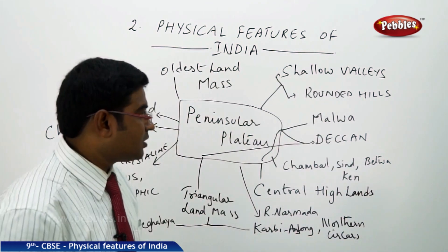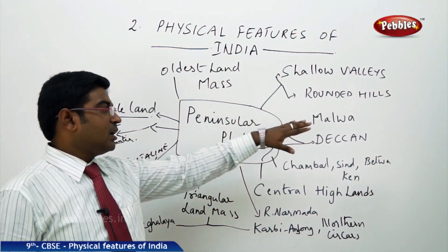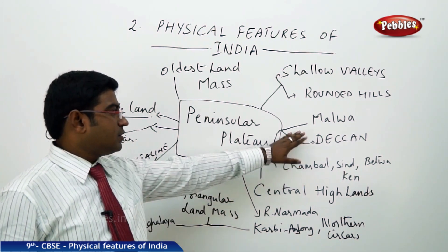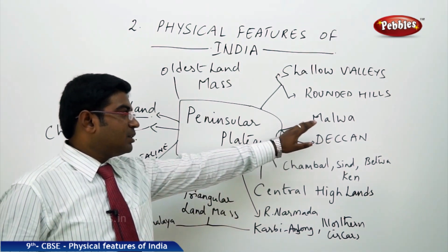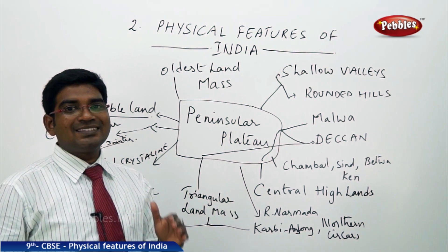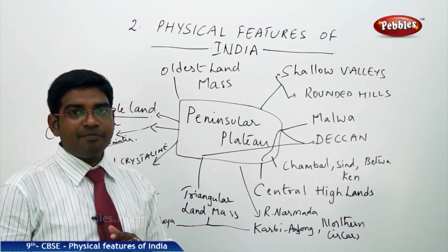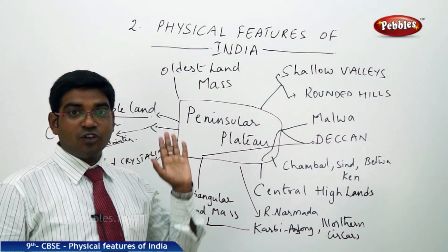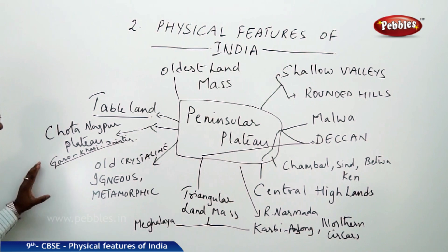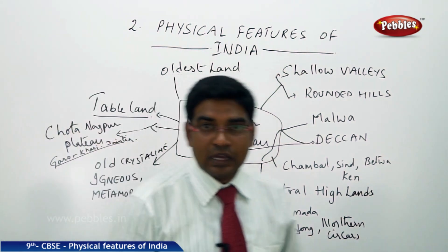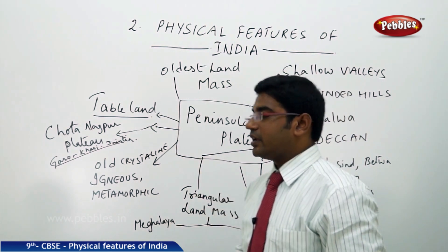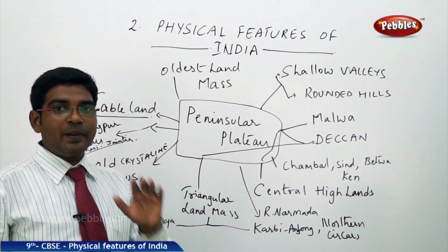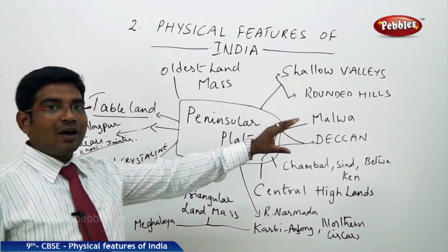Since the igneous and metamorphic rocks are very strong and stable, the Peninsular Plateau is very strong. In the Peninsular Plateau, we have two major regions: the Malwa Plateau, also known as the Central Highlands, and the Deccan Plateau region. The Malwa Plateau is located in the central part of India, surrounded by the Aravalli range, the Satpura range, the Vindhya mountain ranges, and on the eastern side the Chotanagapur Plateau, which is surrounded by Garo hills, Khasi hills, and the Jaintia hills.